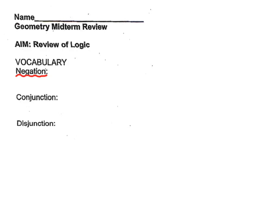Negation — what does that mean? Many times we use the word NOT in it. In other words, whatever the given statement is, we just have to write down the opposite of that statement. Such as: 'it is snowing.' The negation of that would be 'it is NOT snowing.'